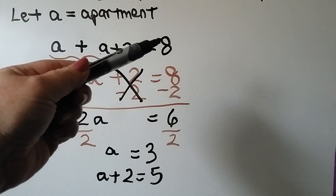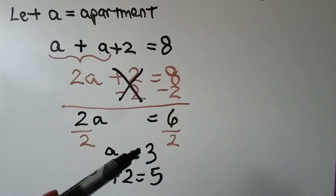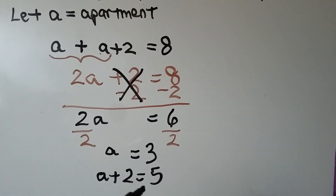And we know there are eight people altogether in the two apartments. One apartment has three, the other one has five. Let's try another one.